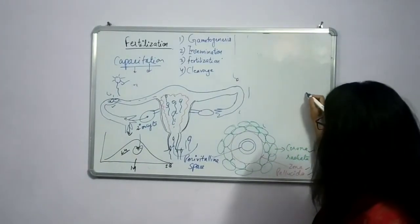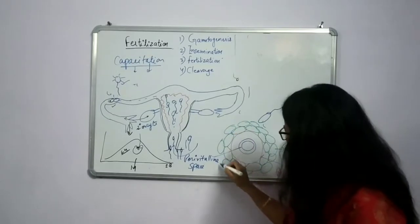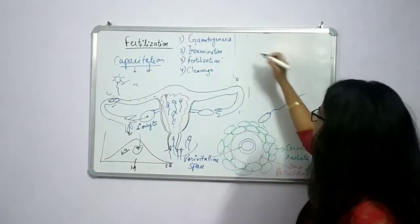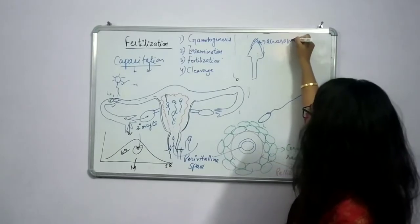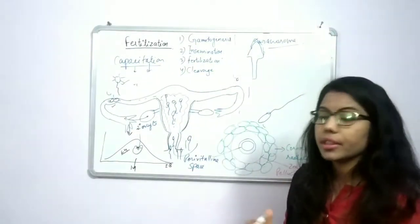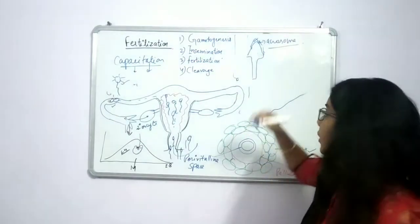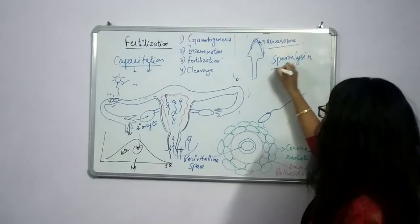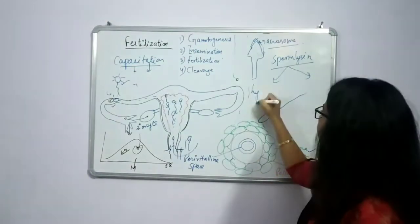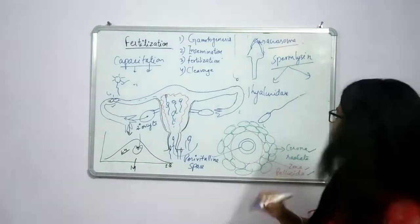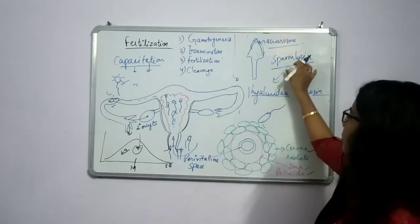So if a sperm comes from outside, it will first try to break through this wall. From the structure of the sperm, the top part is known as the acrosome. In the acrosome, enzymes are present that break down these membranes. The acrosome secretes sperm lysins, which contain two types of enzymes: hyaluronidase and acrosin.